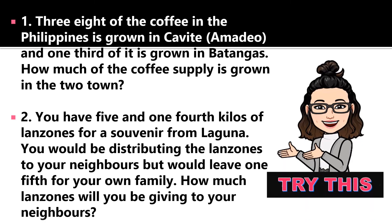Let's try solving some word problems. Problem number one: Three-eighths of the coffee in the Philippines is grown in Cavite, specifically Amadeo, and one-third of it is grown in Batangas. How much of the coffee supply is grown in those two areas? Problem number two: You have 5 and 1/4 kilos of Lanzones as a souvenir from Laguna. You will distribute the Lanzones to your neighbors but would leave one-fifth for your own family. How much Lanzones will you be giving to your neighbors?